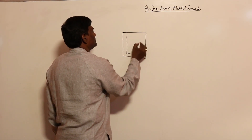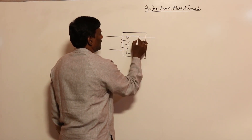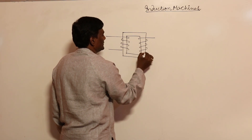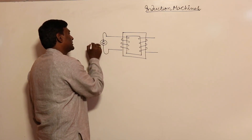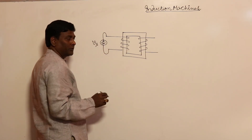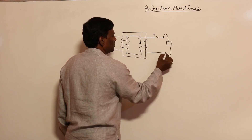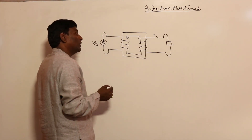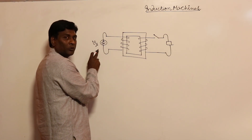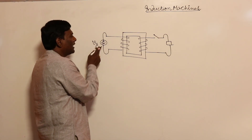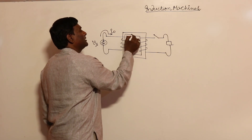Consider a transformer with a primary and secondary winding. We apply the supply voltage to the primary. If the load on the secondary is open — not yet connected — then the primary only will take no-load current, and that no-load current will set up the flux.